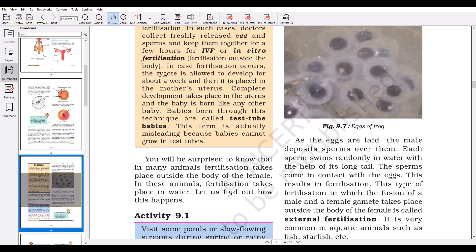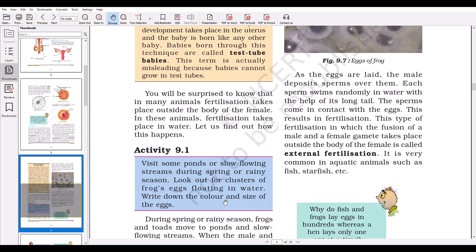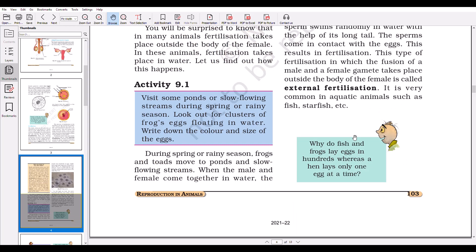In frogs, the fertilization occurs outside the body of the female. This type of fertilization in which the fusion of a male and female gamete takes place outside the body of the female is called external fertilization. In the case of eggs, the female lays eggs and the male deposits sperms over them. Each sperm swims randomly in water with the help of its long tail. The sperms come in contact with the eggs. This results in fertilization. As it occurs outside the female body, this is known as external fertilization.